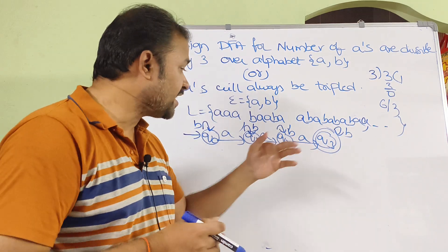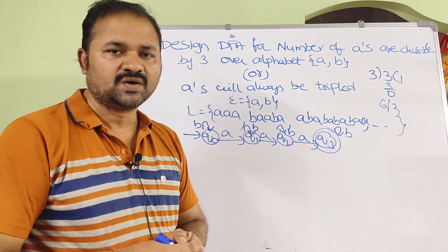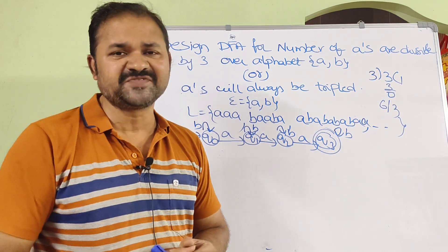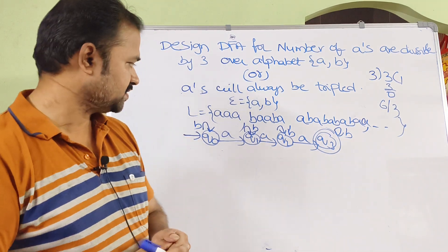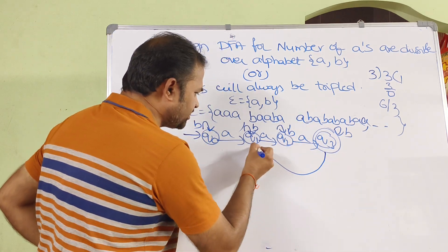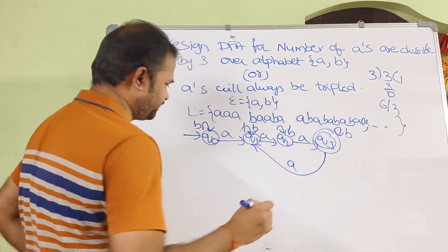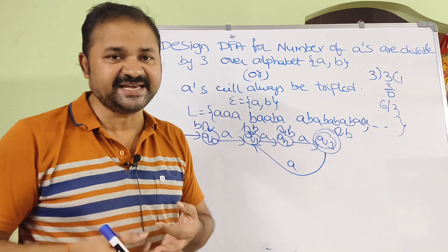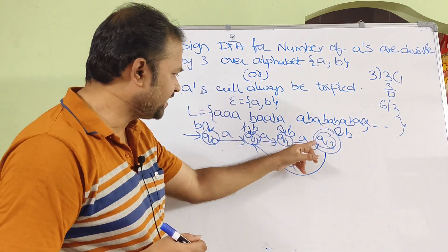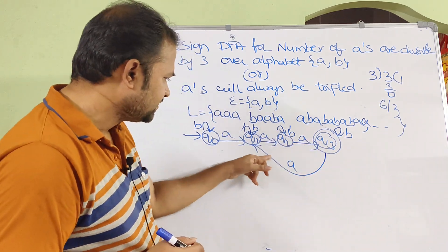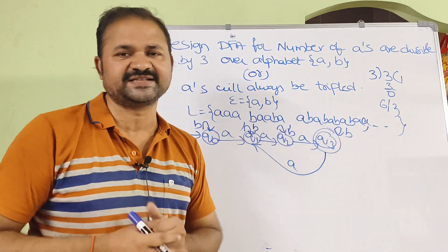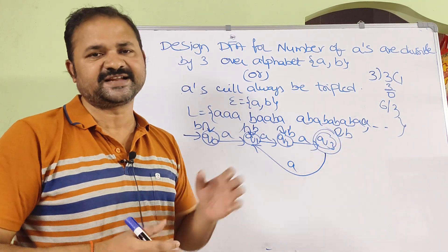Next, the DFA should also accept 6 A's. For that purpose we need to make an extra connection. If we apply A on Q3, we go to Q1. So for 6 A's: 1st A goes to Q1, 2nd to Q2, 3rd to Q3, 4th A goes back to Q1, 5th to Q2, 6th to Q3 — which is our final state. So like this we can construct the DFA.